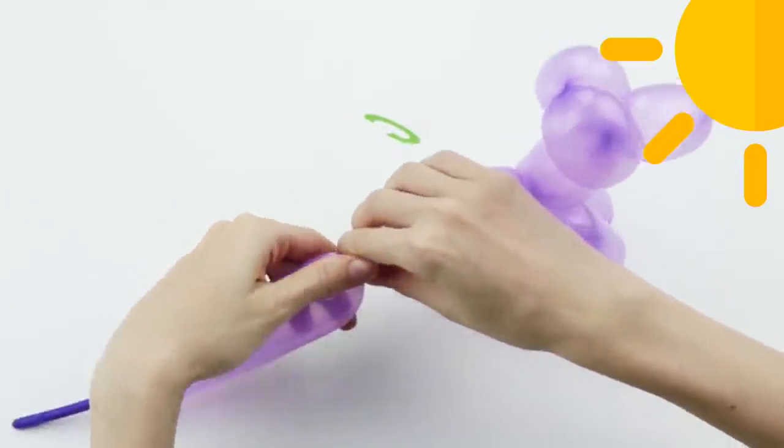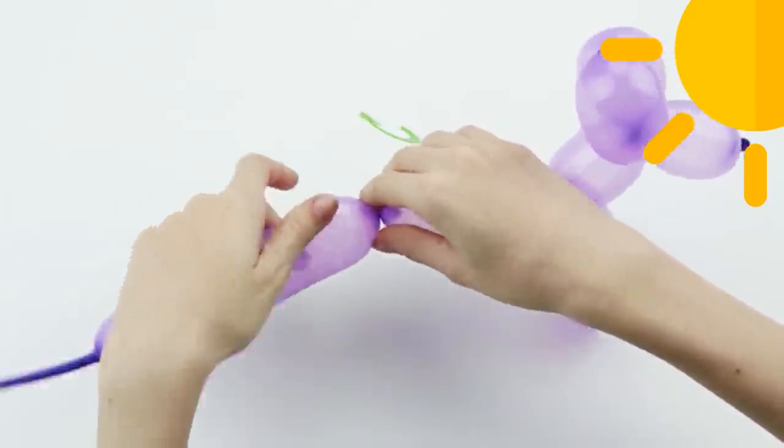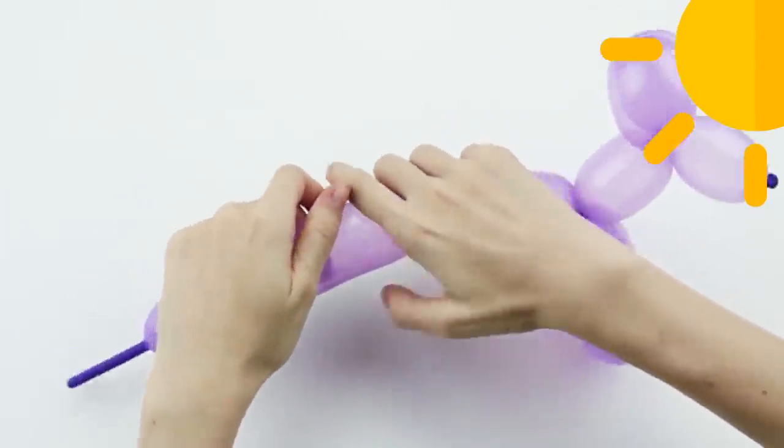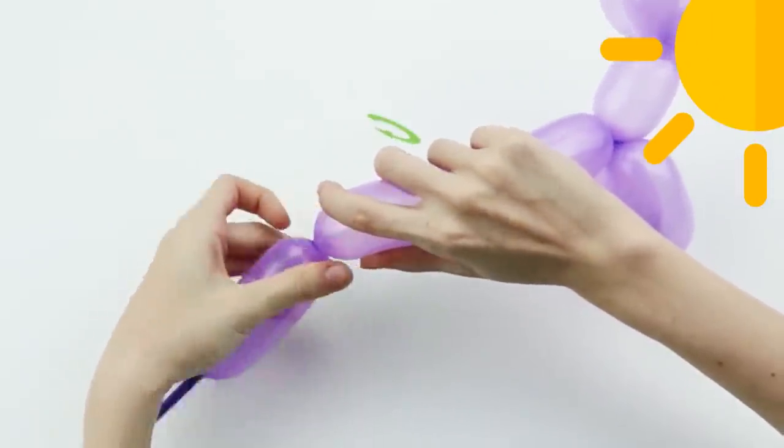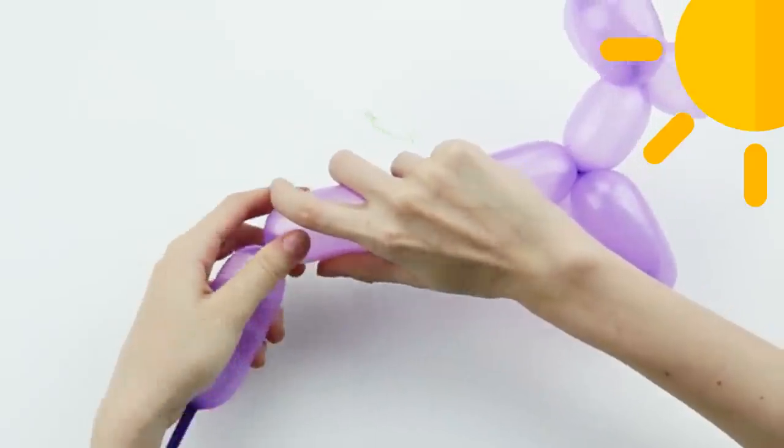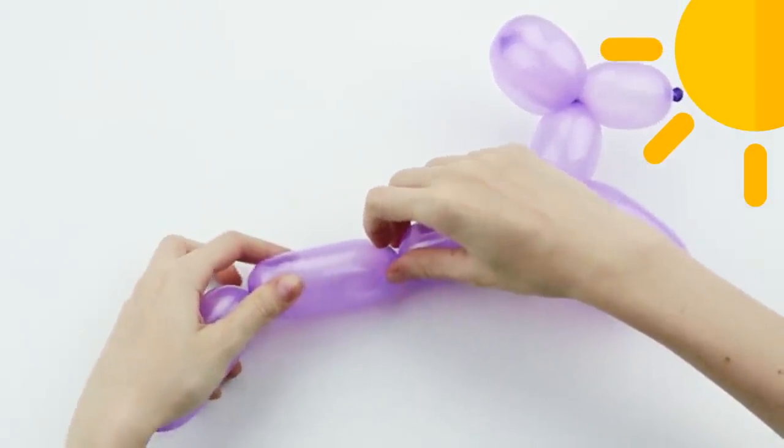Make 3 more basic twists. This time divide the remaining length of the balloon into 4 equal segments. The first segment is the dog's body, the second two segments will become the back legs of the dog, and the final segment is the tail.